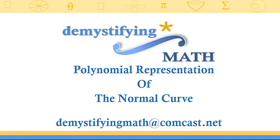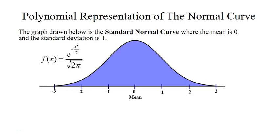Welcome to Demystifying Math. In this lesson we're going to find a polynomial that represents the normal curve. We have a picture of the normal curve drawn, and the area under the curve is 1, the mean is 0, and the standard deviation is 1. The equation for the curve is e to the negative x squared over 2, divided by the square root of 2 pi.